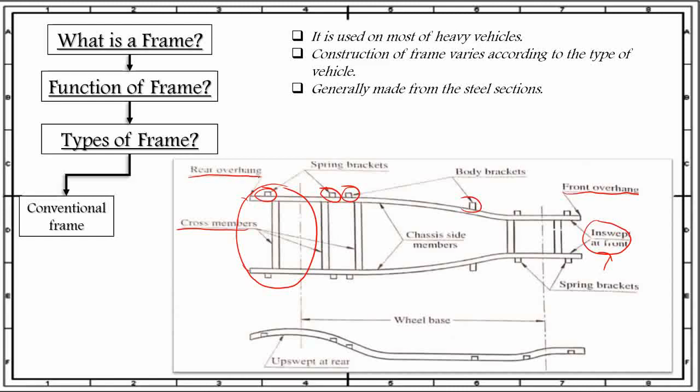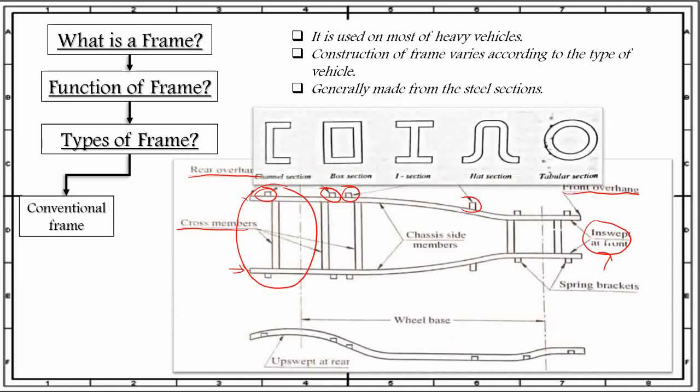These sections, cross members and side members, are made up of either channel section, box section, I section, hat section, or tubular section. The channel section and box section have higher bending stiffness compared to solid square section with the same cross-sectional area. Therefore, both these sections are used for side long members.